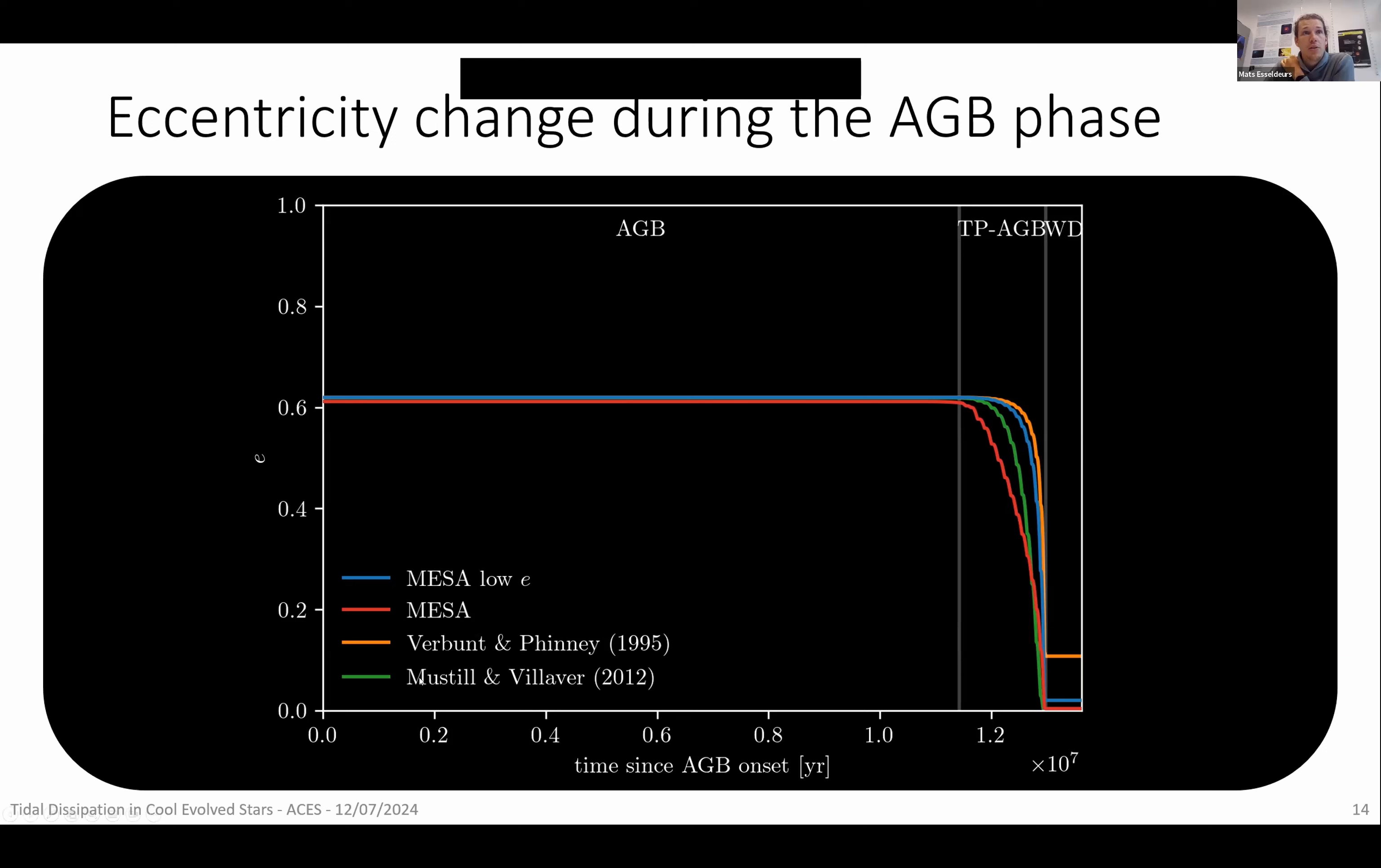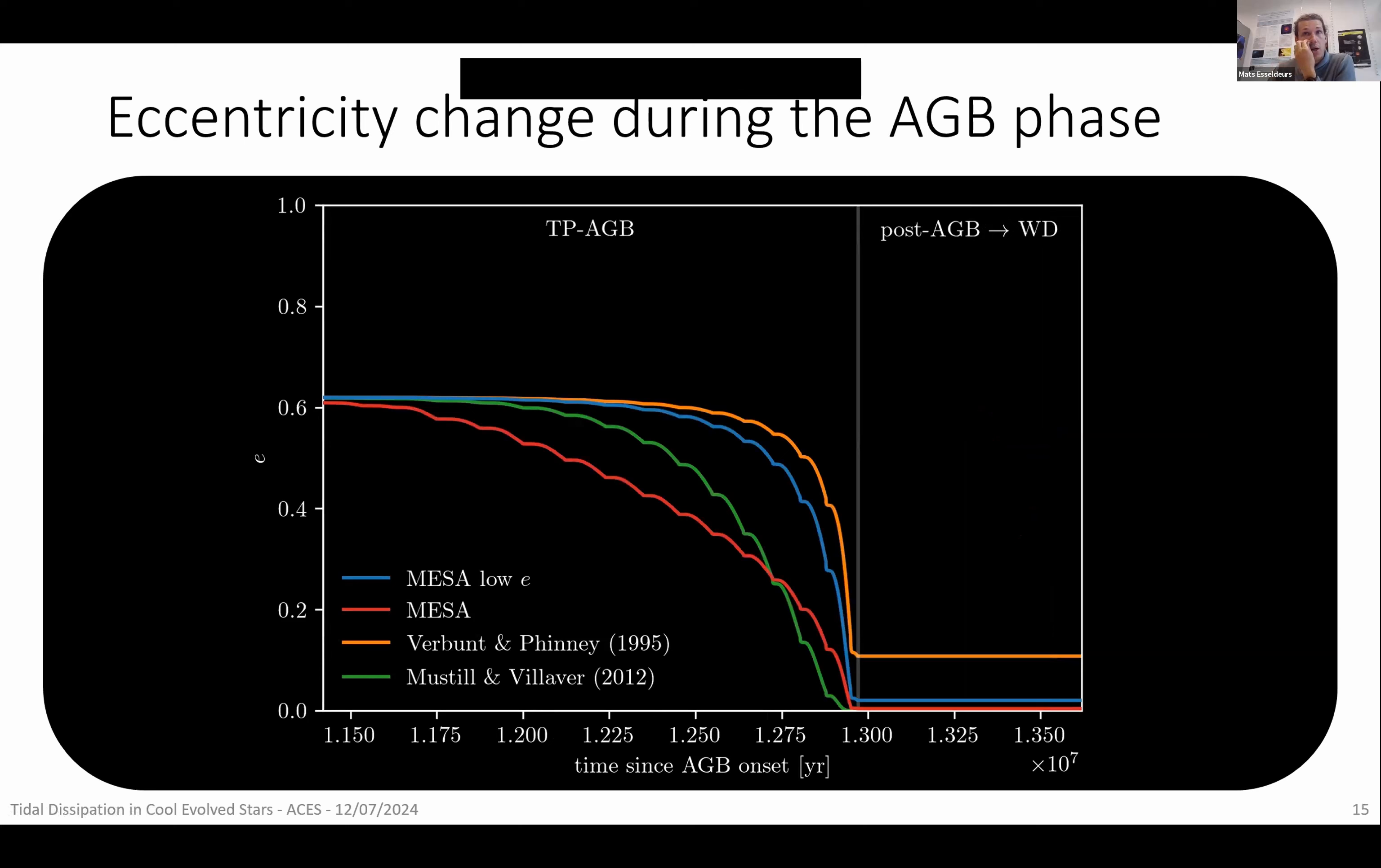And what do I plot in green and in orange? It's two different parameterized equations that are used in literature. In blue is my computations, but then for an equation that assumes that you have a sufficiently low eccentricity or quite low eccentricity, which is not always extremely correct. So I also indicated the full computation in red. And you can see that throughout the AGB phase before the thermal pulses start, not a lot is happening. So let me zoom in on the thermal pulse phases where things start to change.